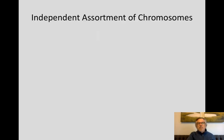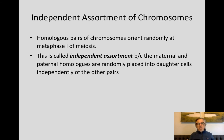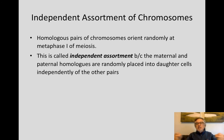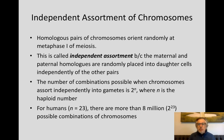Now I want to talk about several ideas that have to do with promoting variation in the genome. The first comes out of the idea that when homologous pairs of chromosomes line up on the metaphase plate of meiosis one, they do so randomly. This is called independent assortment, because maternal and paternal homologues are randomly placed into daughter cells, independently of the other pairs. The number of combinations possible when chromosomes are sorted independently is given by the formula two to the N, where N is the haploid number. For humans, that's two to the 23, which is more than eight million different possible combinations.